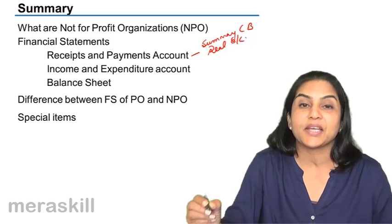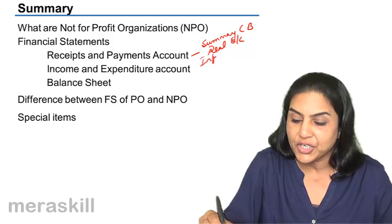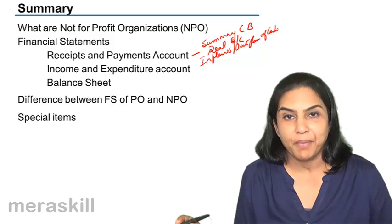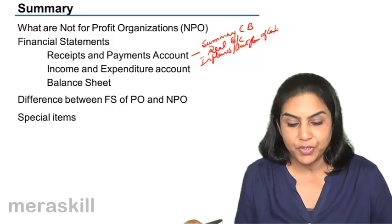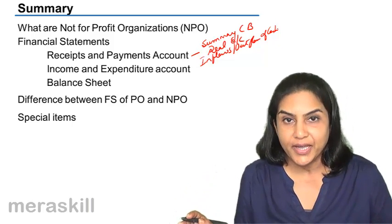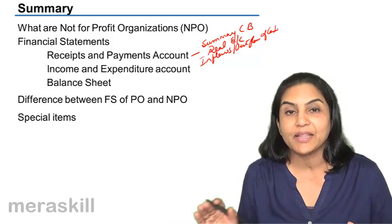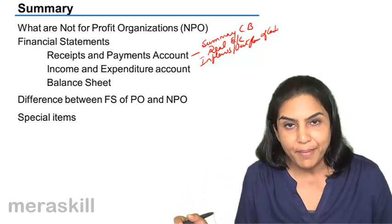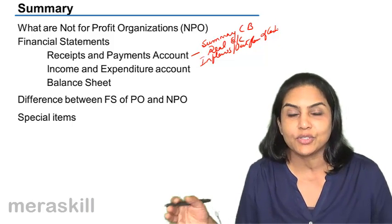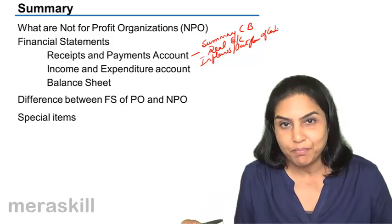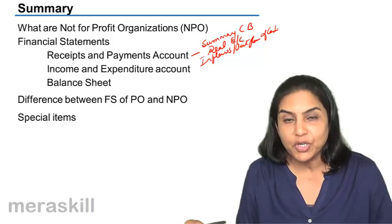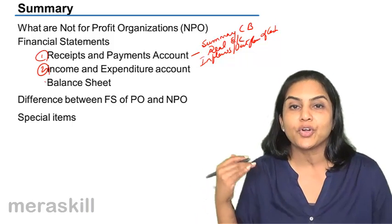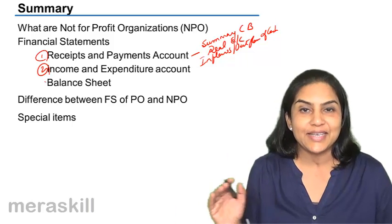Since it is a summary cash book, we can say it is in the nature of a real account — inflows and outflows of cash are recorded. In a club or not-for-profit organization, double entry may not be maintained and books may not be kept following an elaborate double entry system. Only some records of members, a bank statement, records of membership fees collected, outstanding amounts, and some notings of cash receipts and payments may exist. With the help of all this, a summary cash book or receipts and payments account is prepared. From that, we try to find out the excess of income or excess of expenditure.